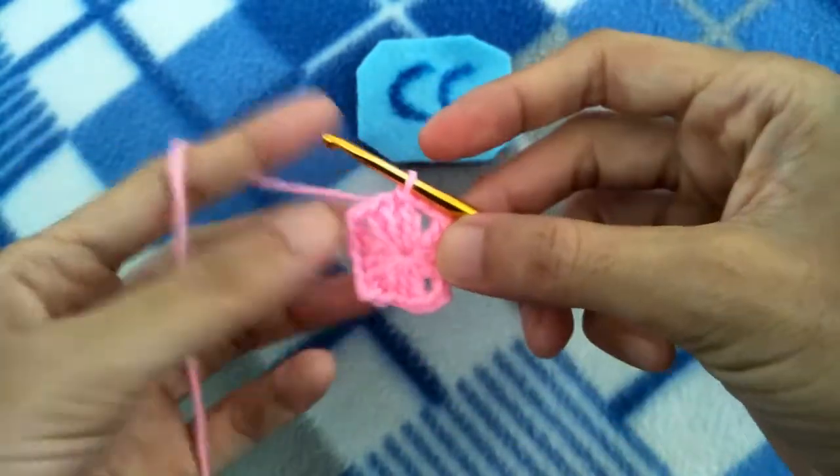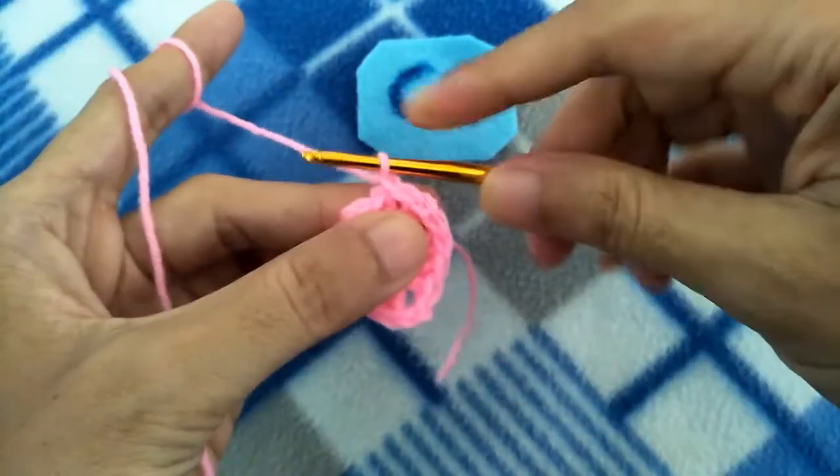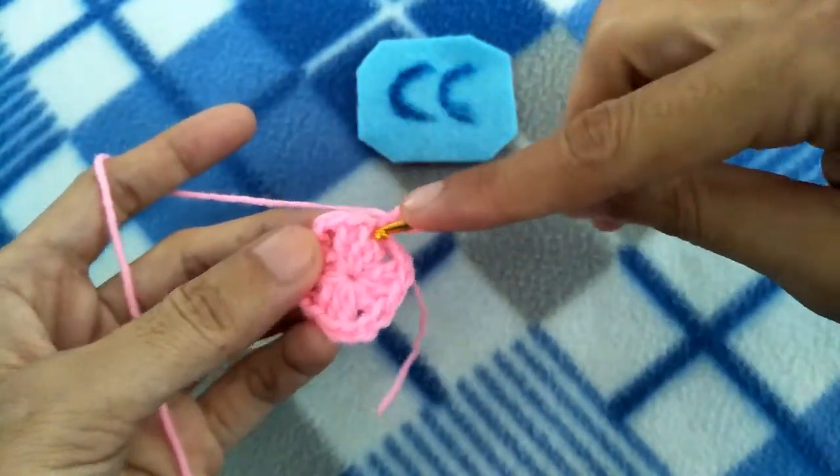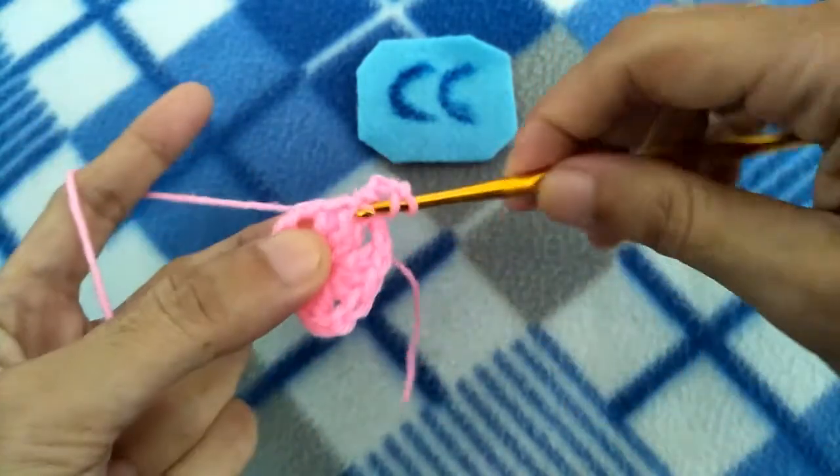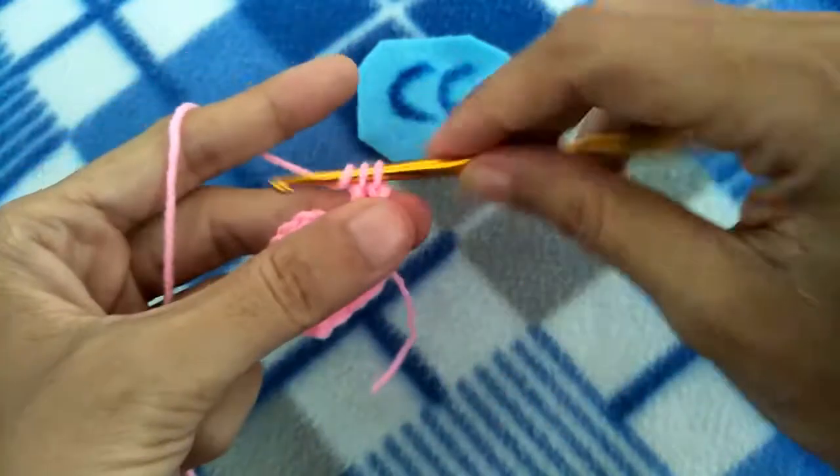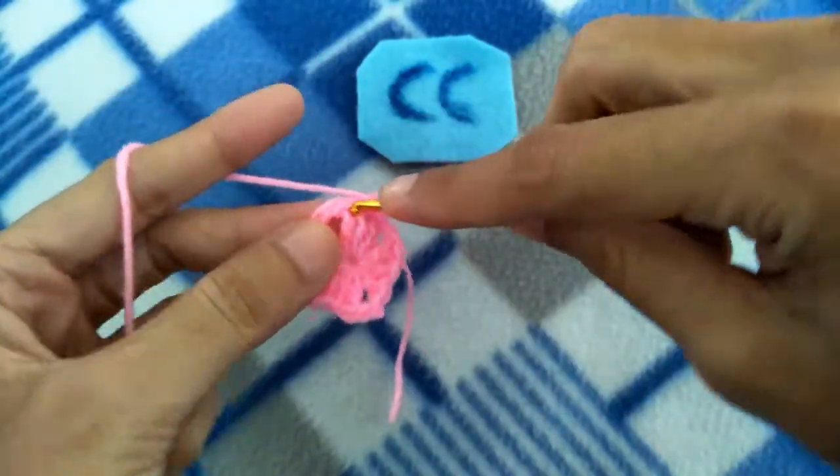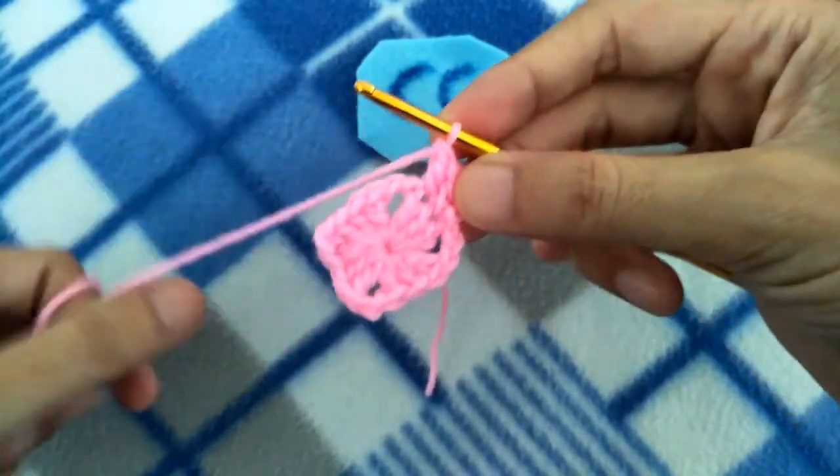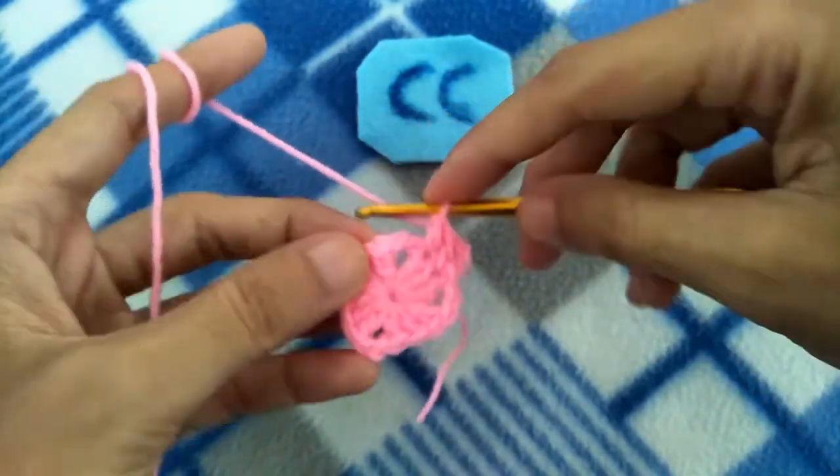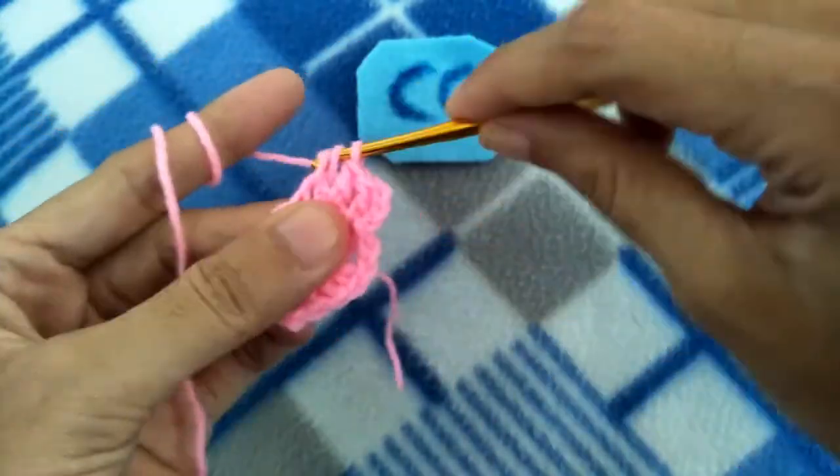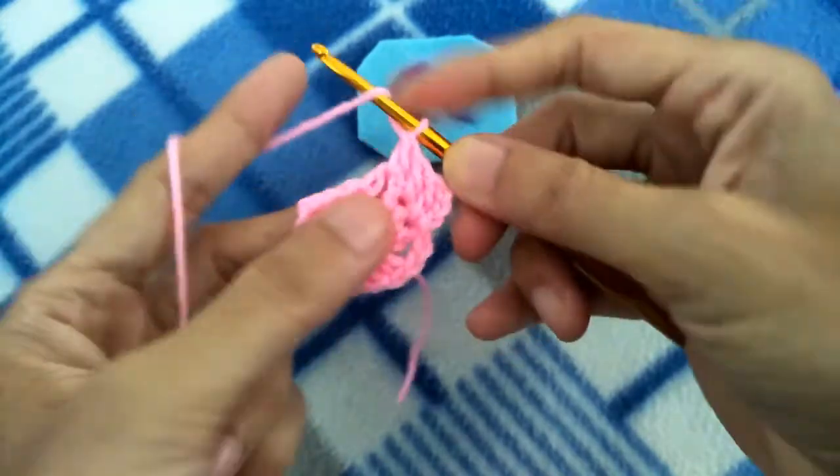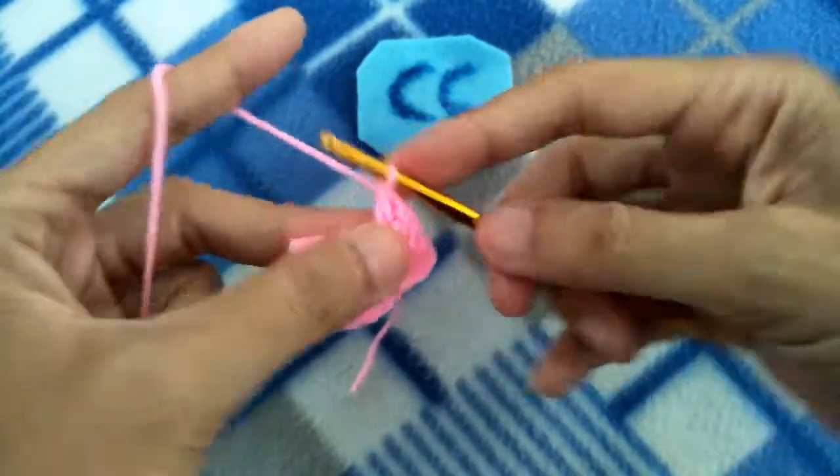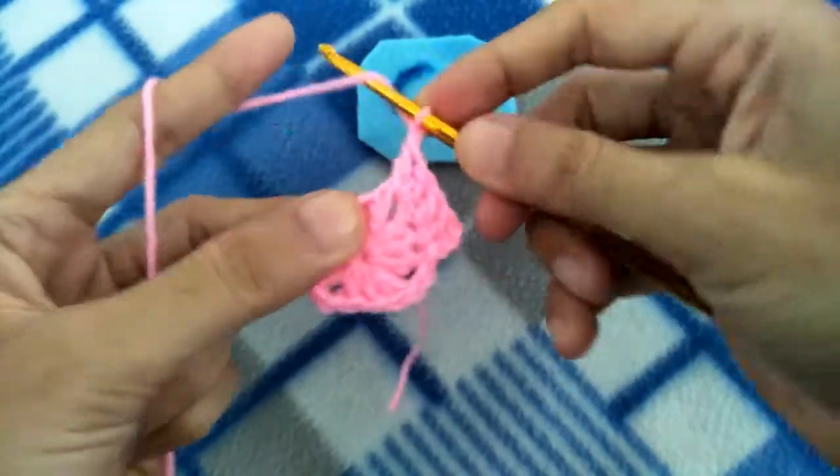For row number 2, make chain 3, then double crochet at the same place and double crochet in the next stitch. Then 2 double crochet at the corner. Chain 2, then 2 double crochet in the same corner.